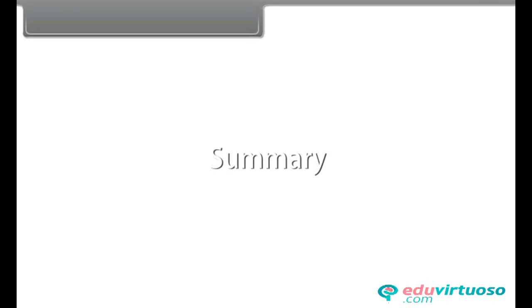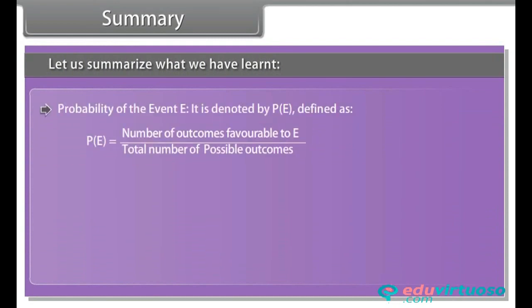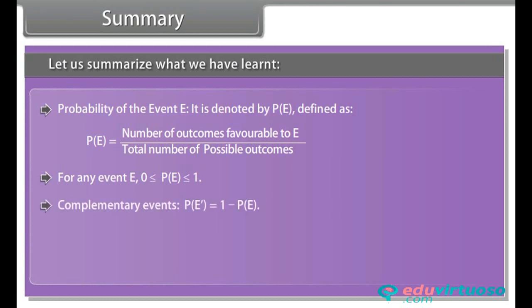Summary. Let us summarize what we have learned. Probability of event E is denoted by P(E) and is defined as: P(E) equals number of outcomes favorable to E divided by total number of possible outcomes. For any event E: 0 is less than or equal to P(E), which is less than or equal to 1.